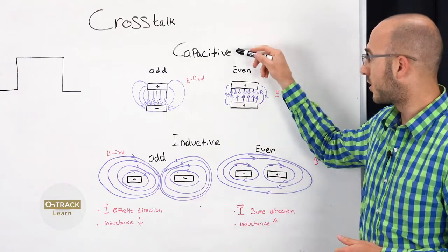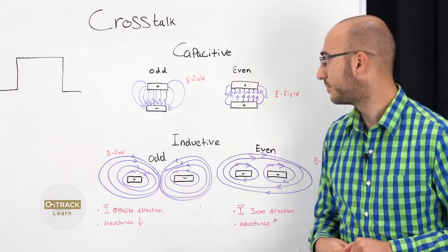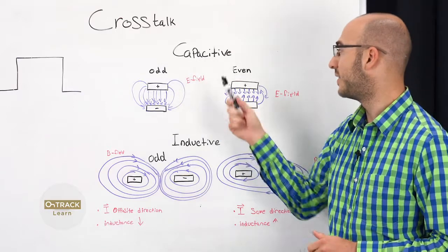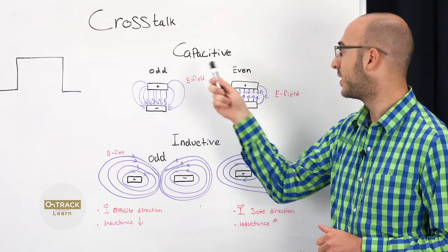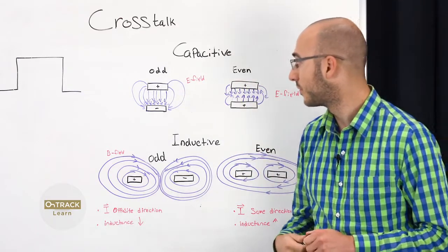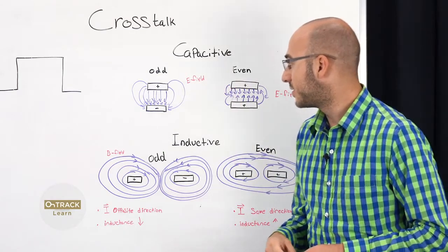So there's two types of crosstalk. There's capacitive and inductive. And also odd and even mode. And that's just out of phase and in phase.